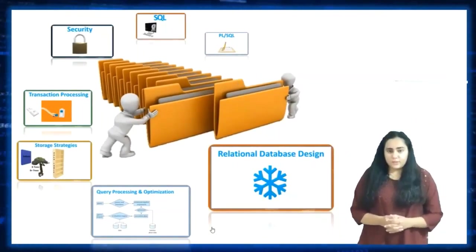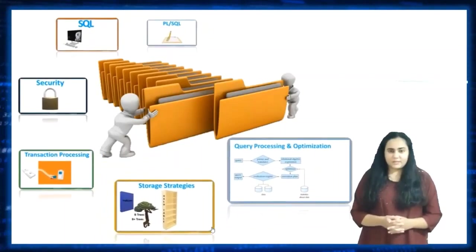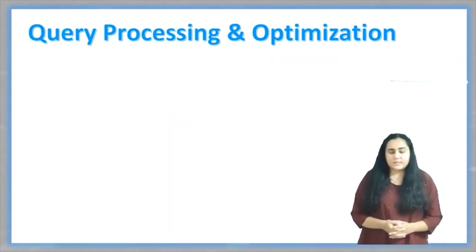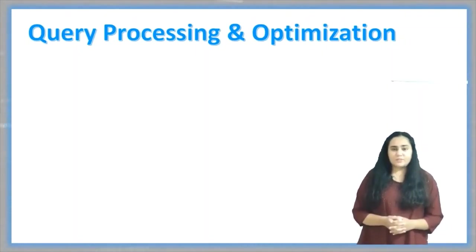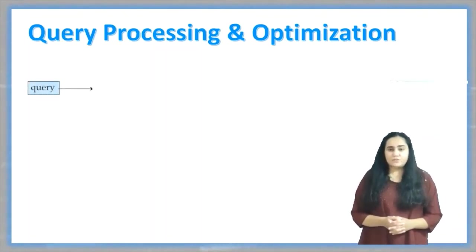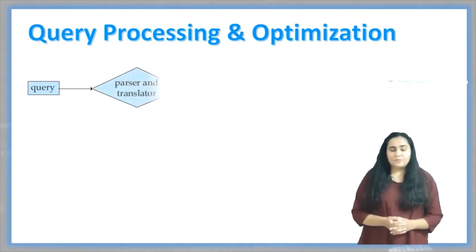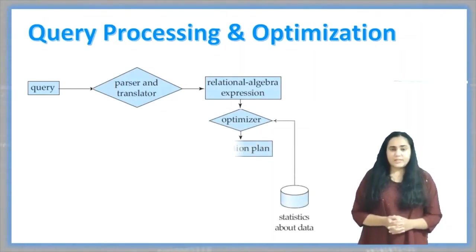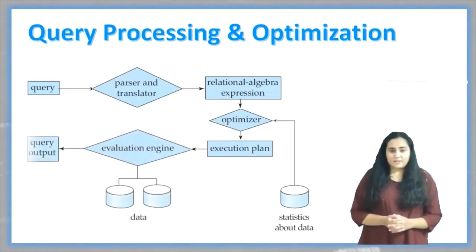Next on our journey let's visit query processing and optimization. Query processing and optimization tells us what goes on behind the scenes in DBMS. When you ask a question to the database, it gets parsed and translated into a relational algebra expression, which is then optimized using statistical data and converted into an execution plan. This execution plan is then evaluated and implemented by the evaluation engine, which fetches data from the database and produces the required output.